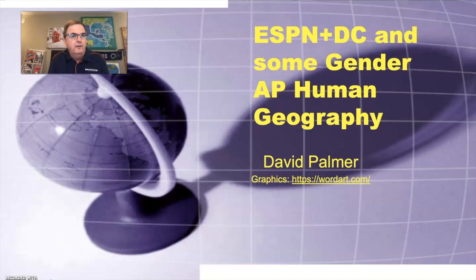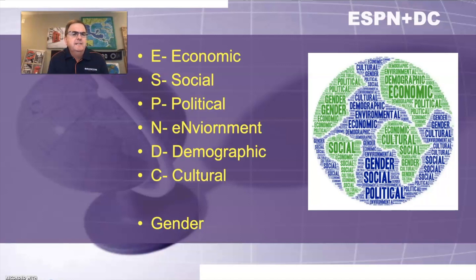What does ESPN DC stand for? The E stands for economic, S is social, P is political, and N is a little trick — a play on words — it's environmental. D is demographic, and C is cultural. And the last thing is gender, which we'll talk about because that's a big theme within the human geography course.